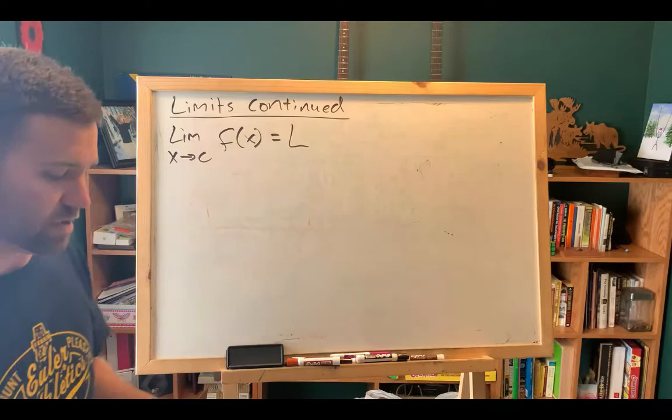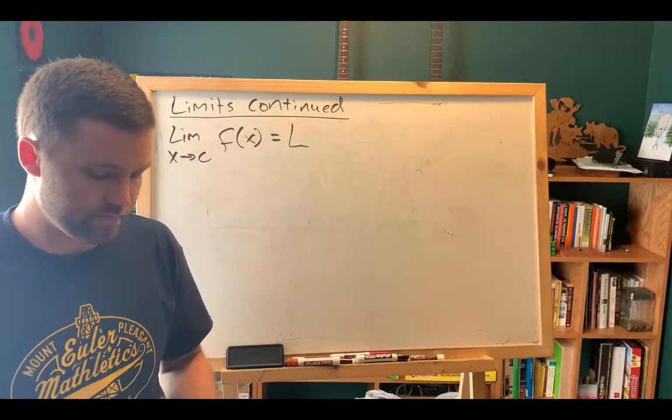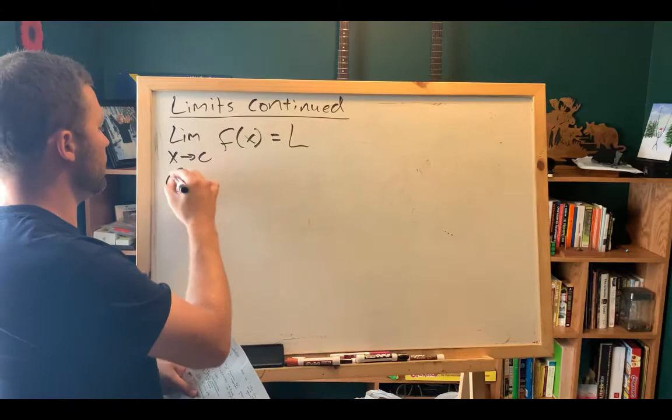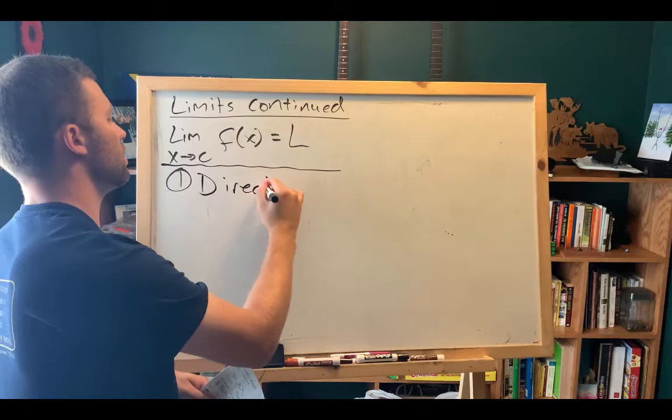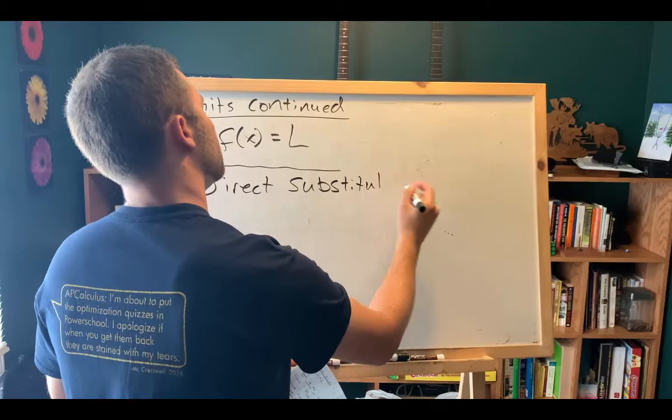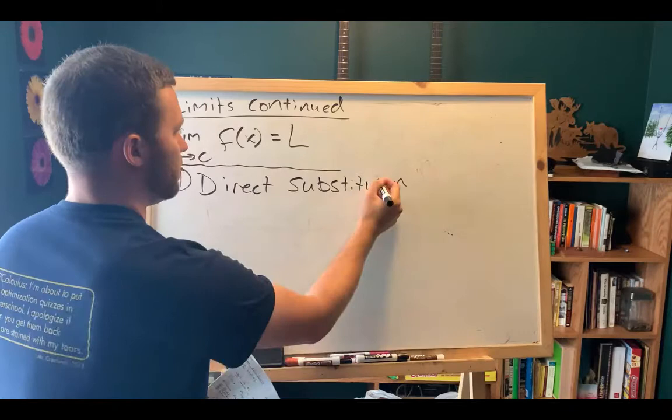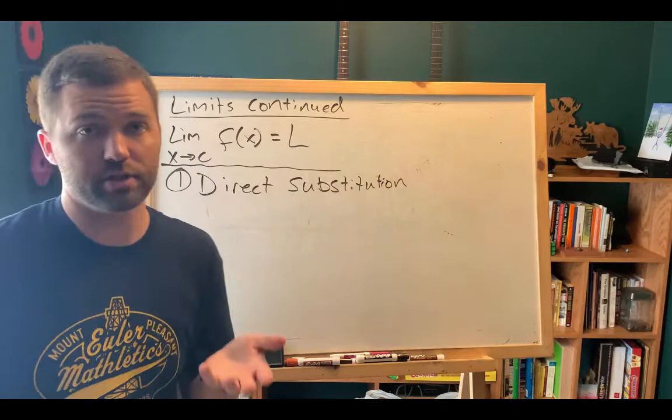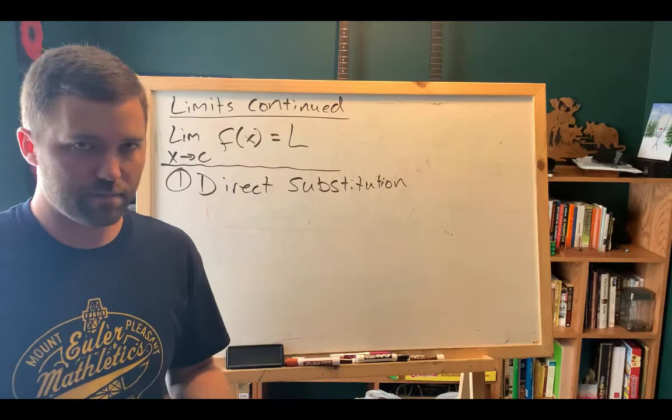So here are the three different methods that you can use to evaluate limits. The first thing you always try is direct substitution. You try direct substitution first because it's possible that the function that you have in front of you, that you're trying to evaluate the limit of, exists at that value. We don't do a lot of problems like that because they're not that interesting, but that's what you should try first.